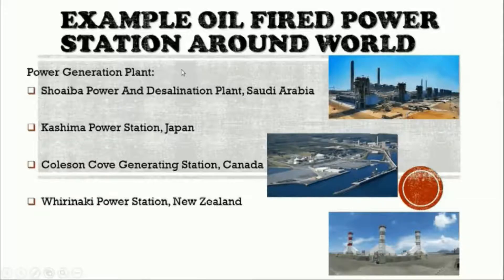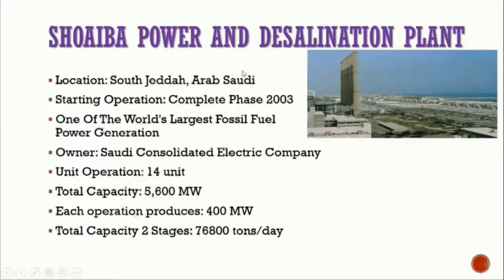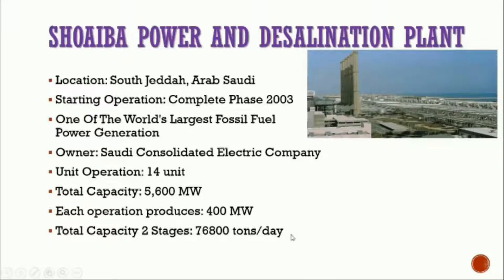Notable oil-fired power stations around the world include the Shoaibah Power and Desalination Plant in Saudi Arabia, Kashima Power Station in Japan, a generating station in Canada, and Wairakei Power Station in New Zealand. The Shoaibah Power and Desalination Plant, located in South Jeddah, Saudi Arabia, completed operation in 2003. It is one of the largest fossil fuel power generation facilities, owned by Saudi Consolidated Electric Company, with 14 units of operation and a total capacity of 5,600 MW, each unit producing 400 MW. This power station burns 76,800 tons of fuel per day.